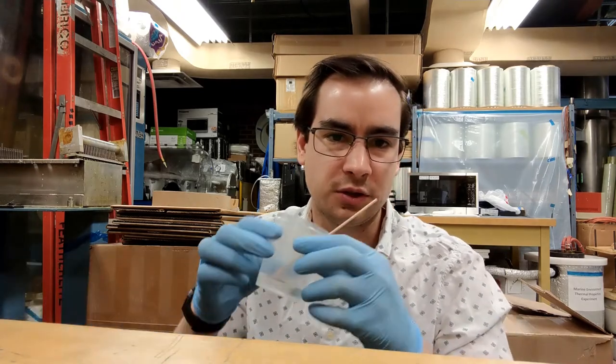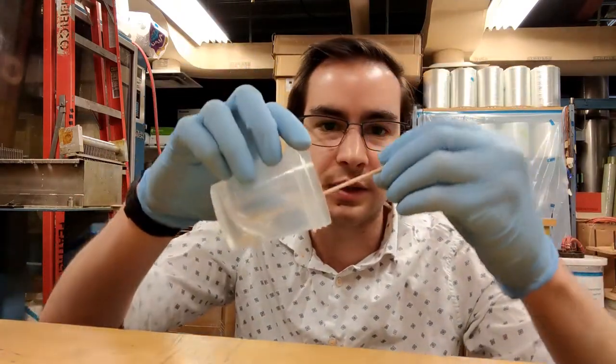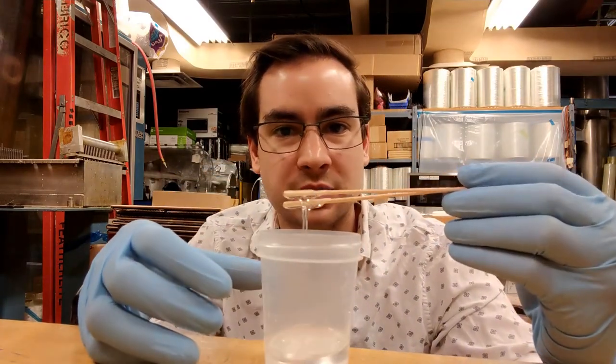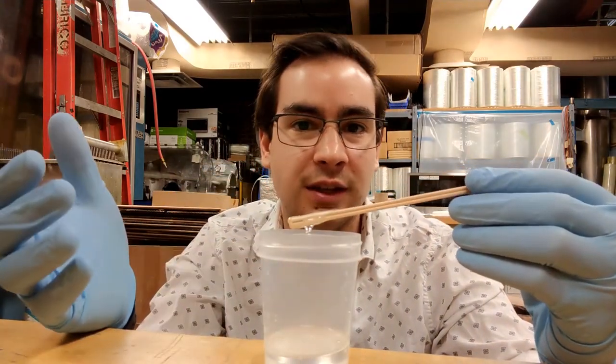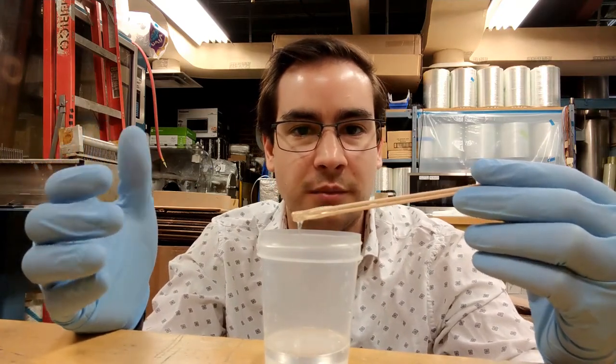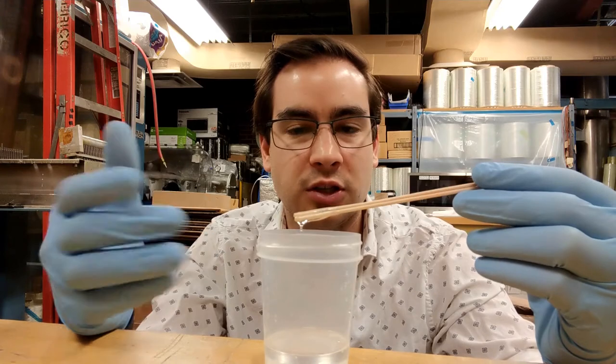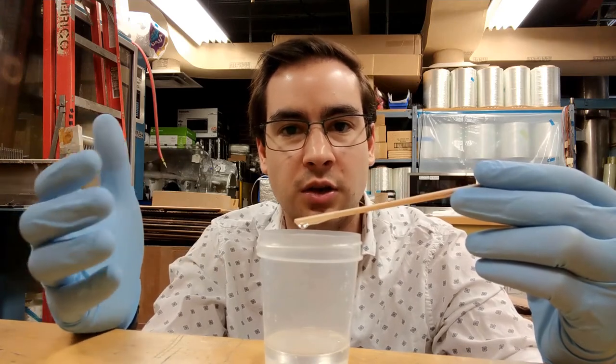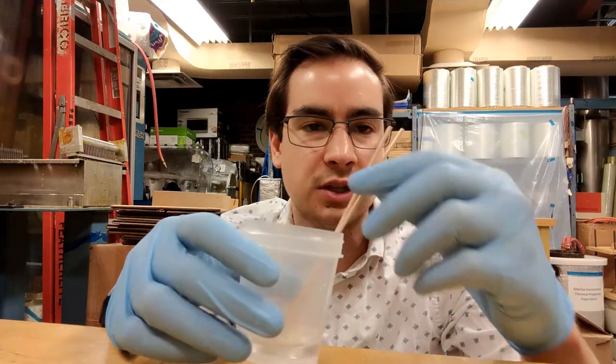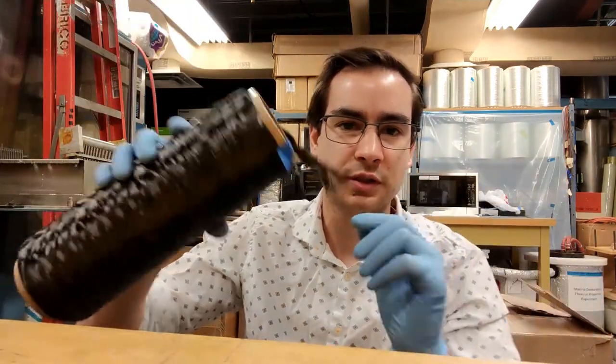What that means is we start with a resin like this. This is actually the resin we use. It's a two-part epoxy resin, similar to what you'd find at Canadian Tire or Home Depot. It's a plastic material mixed with a hardener, and then when it cures, it forms a hard, brittle plastic. And into this, we mix long fiber filaments.